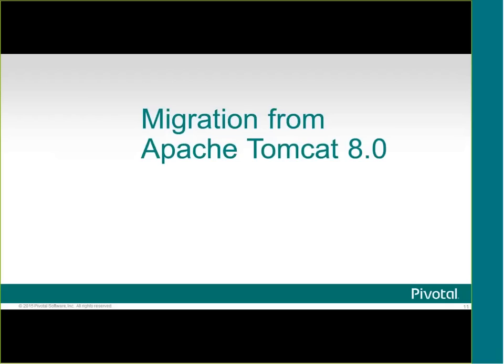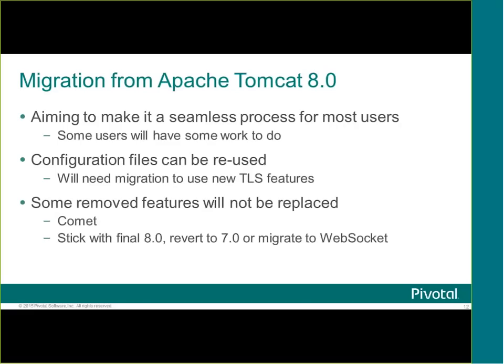If you're currently on Tomcat 8 and you want to migrate to 8.5, we're aiming to make it a seamless process for most users. If all you use is the specification APIs, it should be seamless, and if it isn't we'll do everything we can to fix it. Your configuration files can be reused. If you do want to use some of the new features such as TLS virtual hosting, you will need to modify your configuration files to use the new style of TLS configuration — but you'd need to do that migrating to 9 as well, so that's not unreasonable.